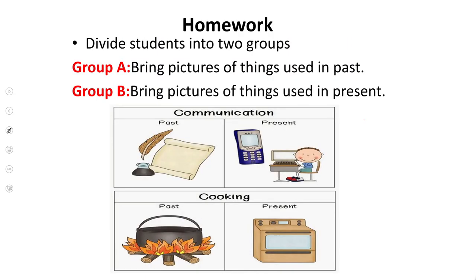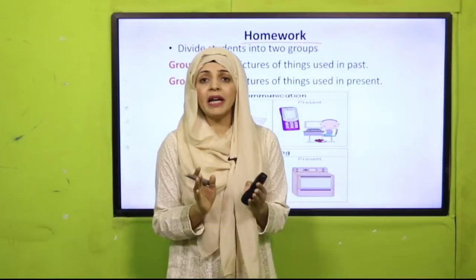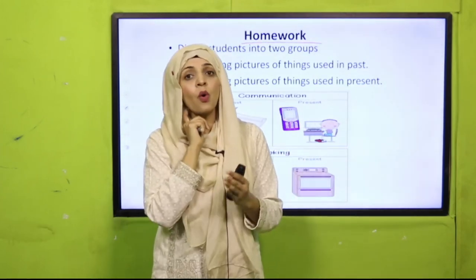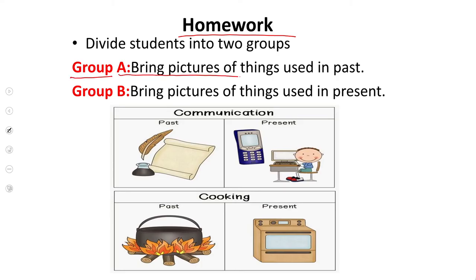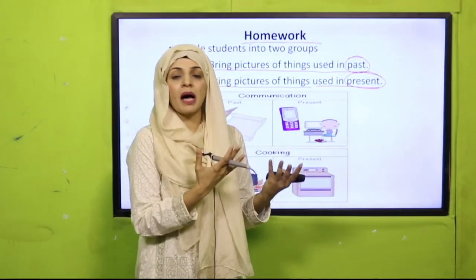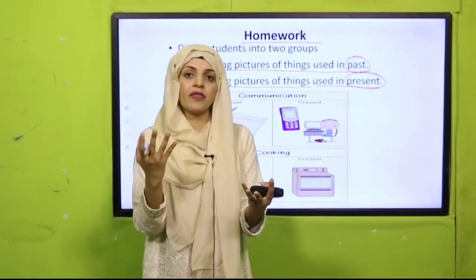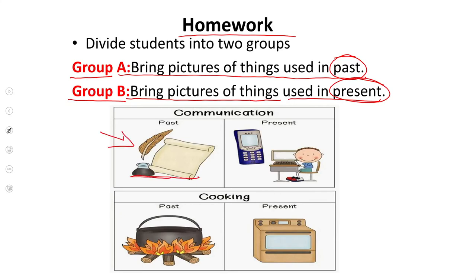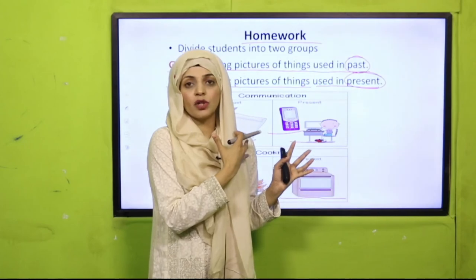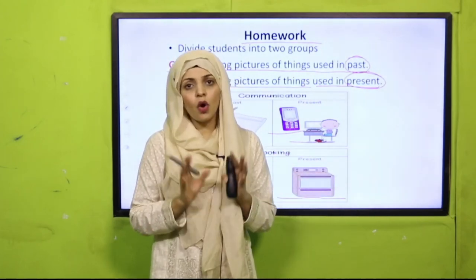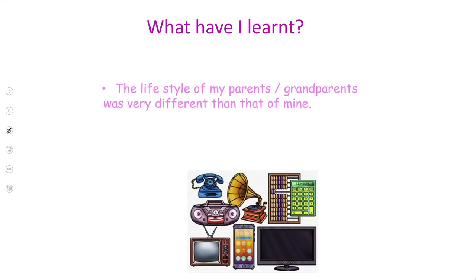Now there is a homework. The teacher will divide you into two groups — Group A and Group B. Group A will bring pictures of things used in the past, and Group B will bring pictures of things used in the present. For example, in old times people used to write letters; nowadays they use computers and mobile phones. In old times people burned wood for fire; nowadays we use cooking ranges, ovens, and stoves. Collect these pictures and bring them to your teacher.